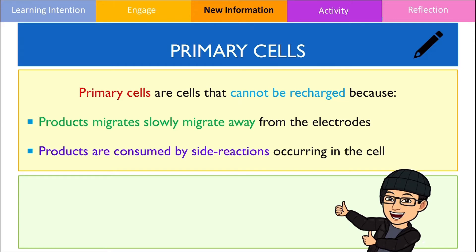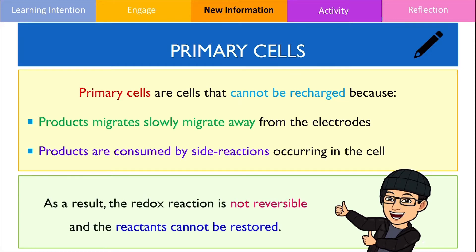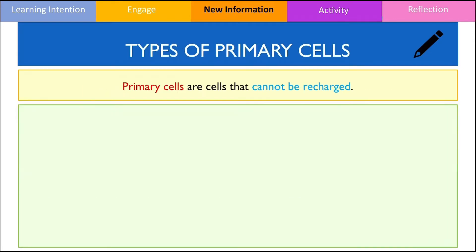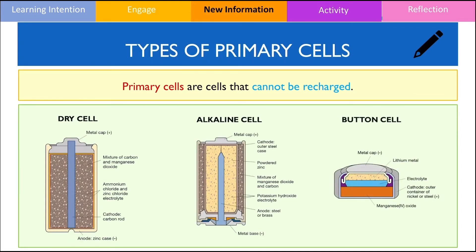As a result, it is not possible to regenerate the reactants. There are three main types of primary cells I would like to discuss in this video. You won't need to know the specific details about the chemical reactions occurring at the anode and cathode for each cell. Instead, I would like you to be aware of the general design features and characteristics.